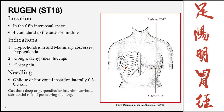Rugen, Stomach 18, is the last point on the 4 cun lateral line, in the fifth intercostal space. After this point, the meridian moves medially to the 2 cun mark. Indications include hypochondrium and mammary abscesses, cough, tachypnea, hiccups, and chest pain. Insertion is oblique or horizontal laterally, 0.3 to 0.5 cun, with caution against deep or perpendicular insertions due to risk of puncturing the lungs.